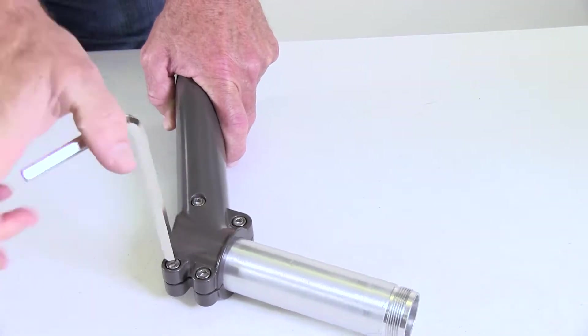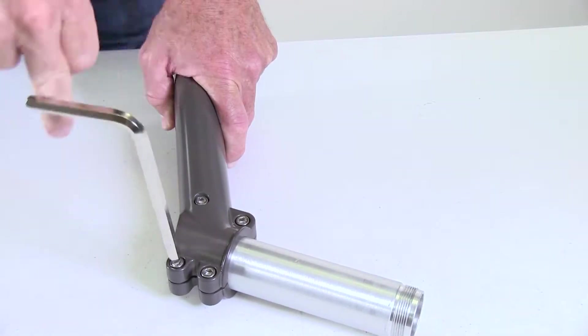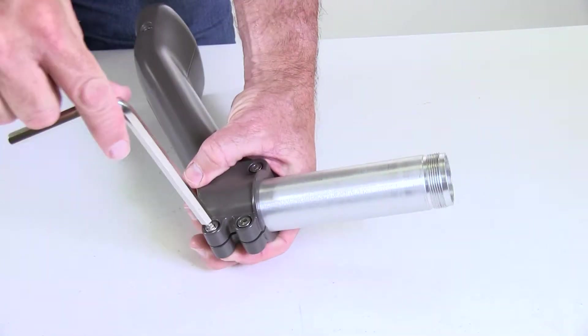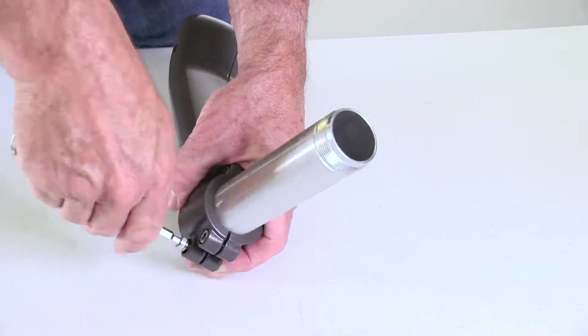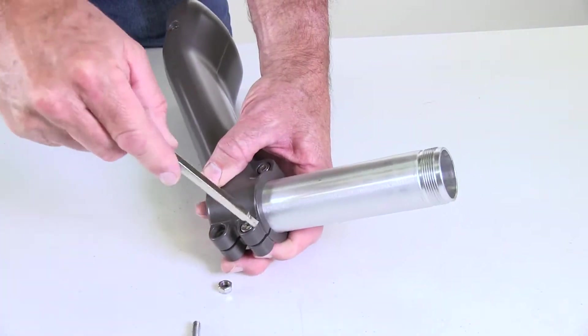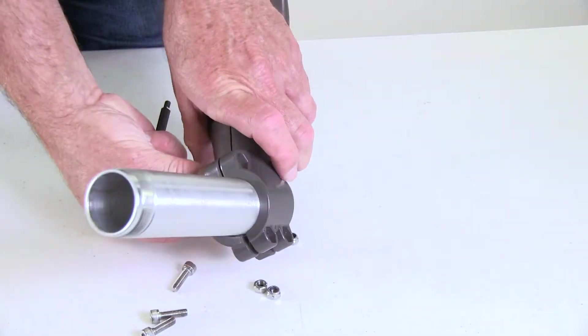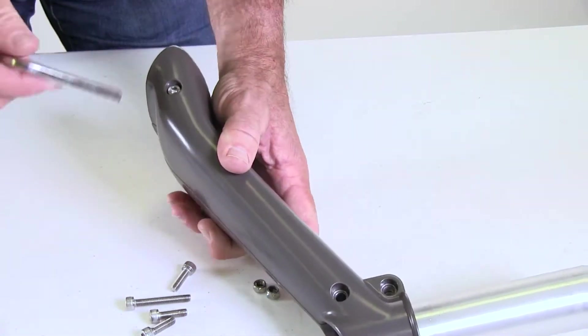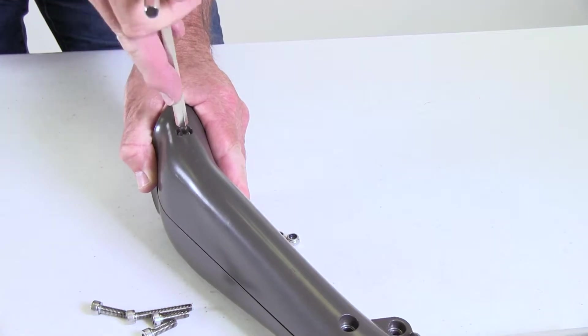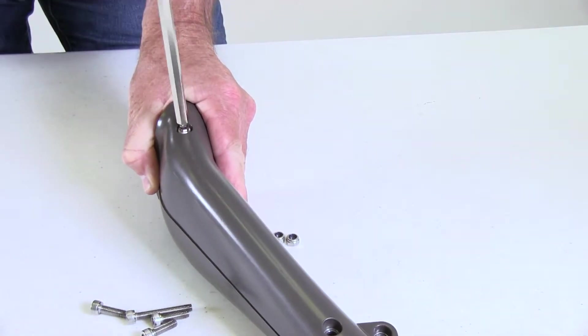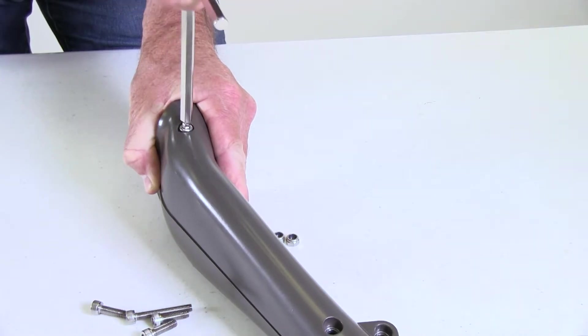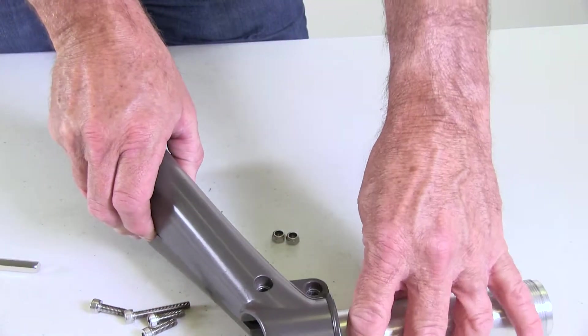Take the hex key wrench and fully remove all four of the screws that clamp the short axle to the arm. The first three screws are all the same length and the fourth screw is slightly longer. Once you have all four top screws removed, take your hex key wrench and loosen the bottom screw just three rotations. One, two, and three. Now remove the short axle from the arm.